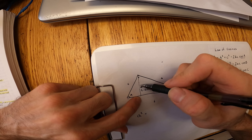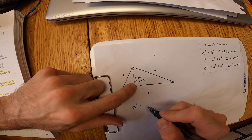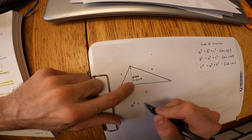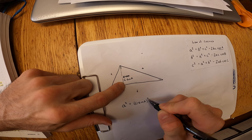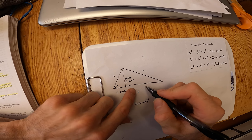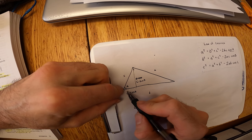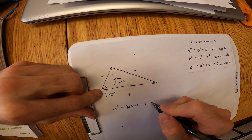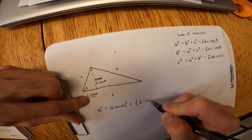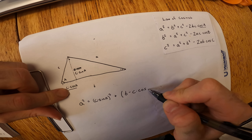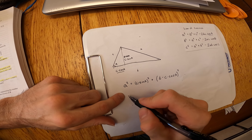Now we're just going to get everything in terms of angle A, because that's what we've got — cosine in terms of angle A, and all those sides. What we know is that this vertical segment is c·sine(A) and this horizontal segment from there to there is c·cosine(A).